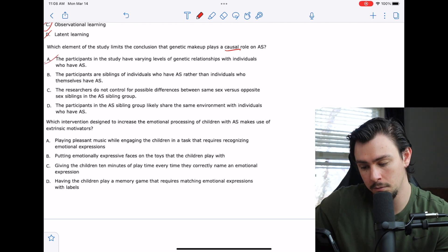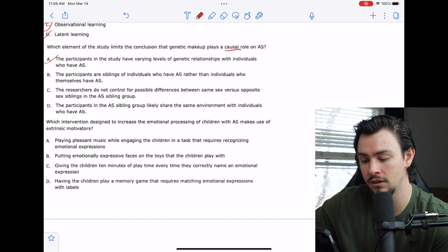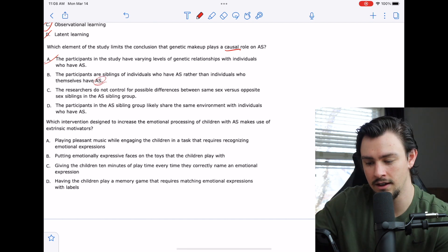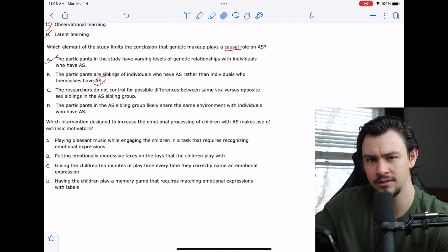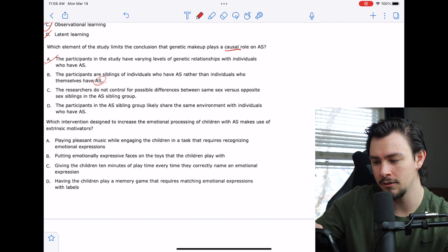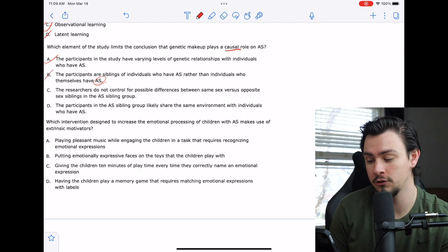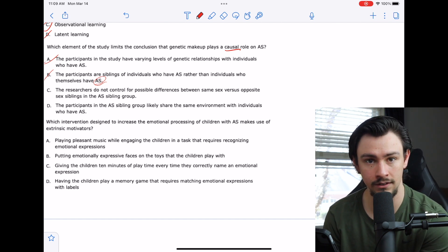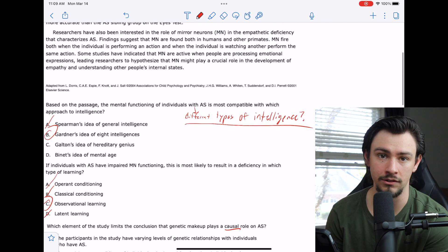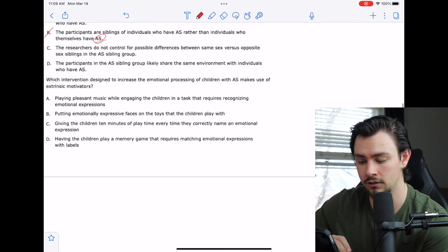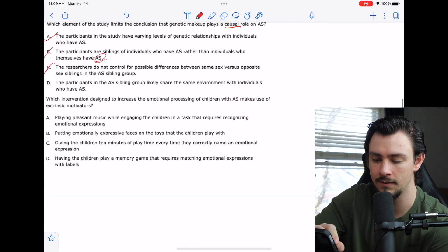Answer choice A says the participants in the study have varying levels of genetic relationships with individuals who have AS. No, they were all siblings. B says the participants are siblings of individuals who have AS rather than individuals who themselves have AS. That makes no sense. C says the researchers do not control for possible differences between same-sex versus opposite-sex siblings in the AS sibling group. Well, that was actually in the passage that they did control for that. Remember, I made a little bit of a deal about it here. They did control for age and sex.